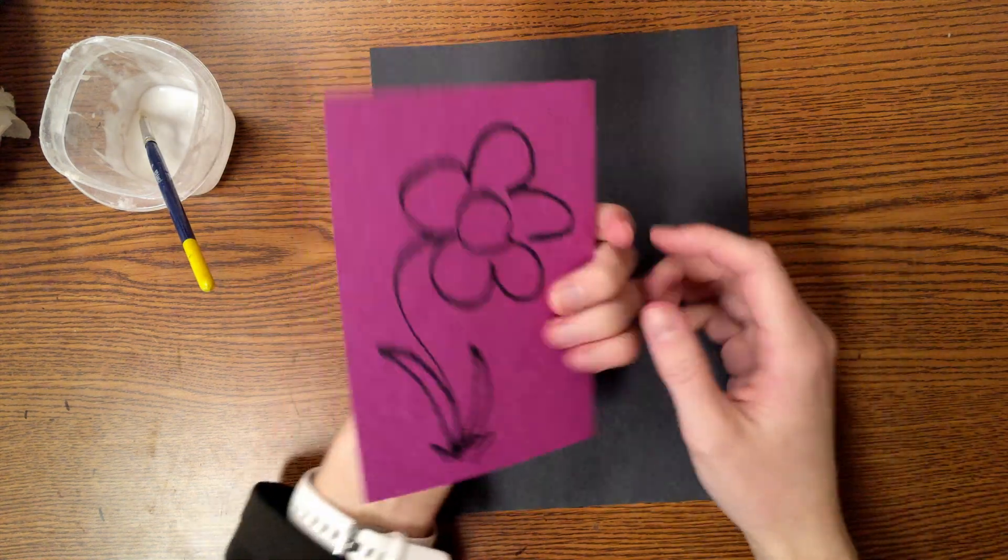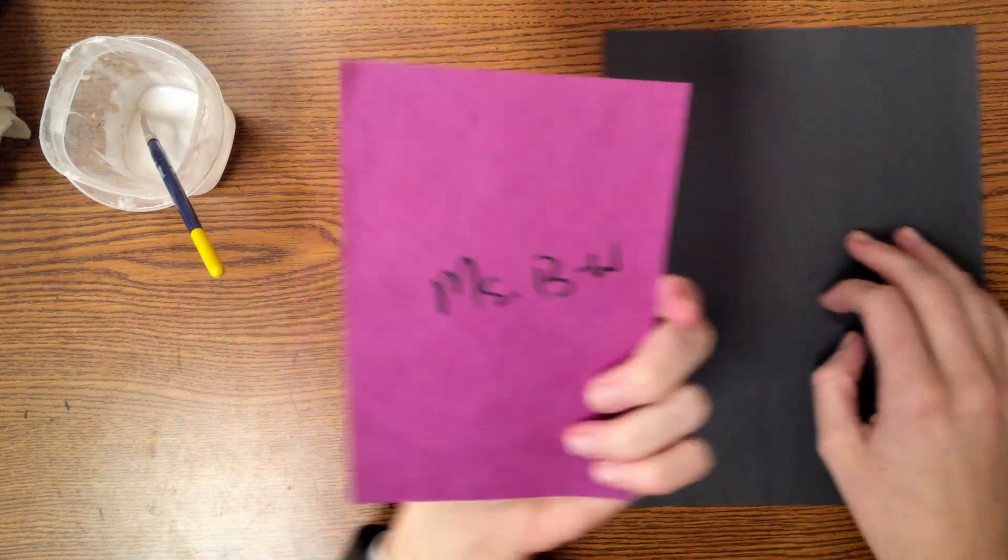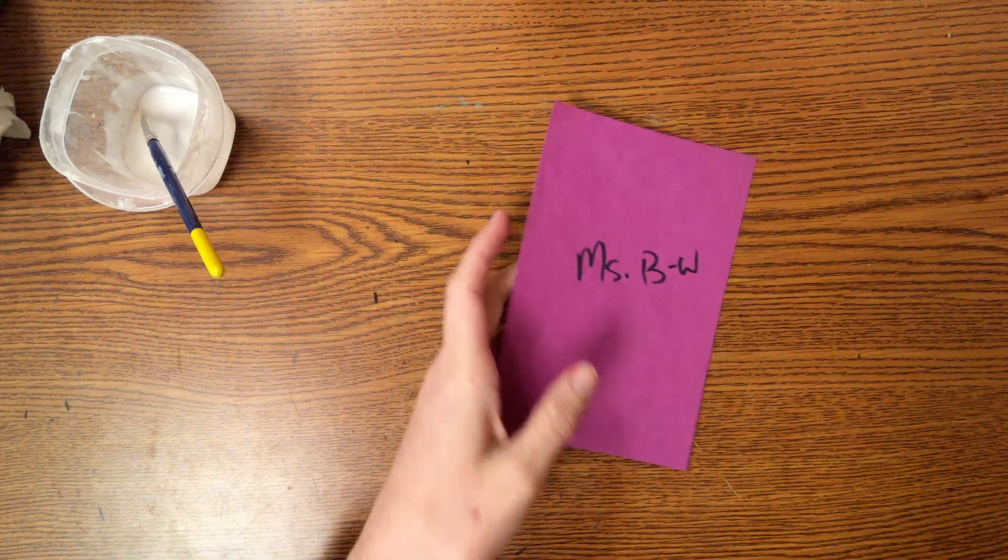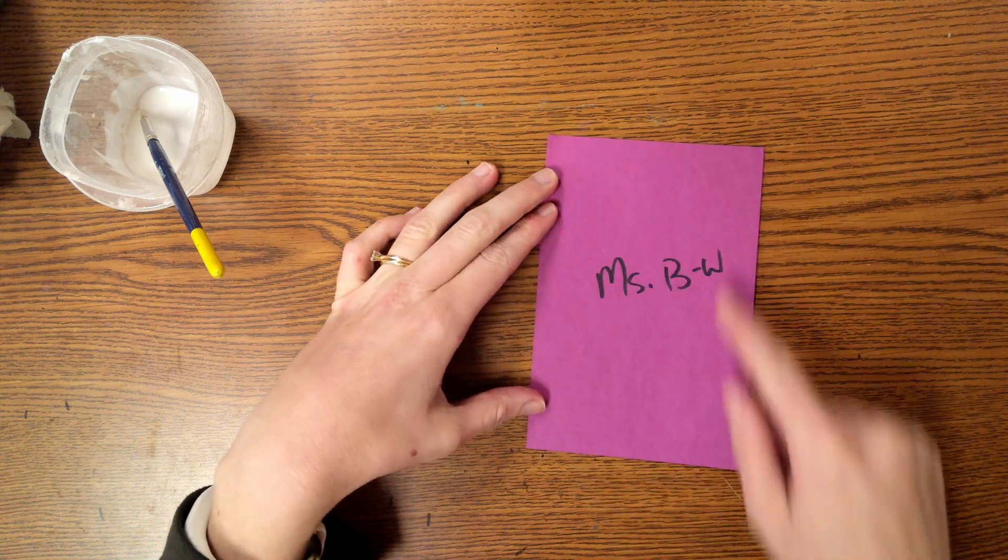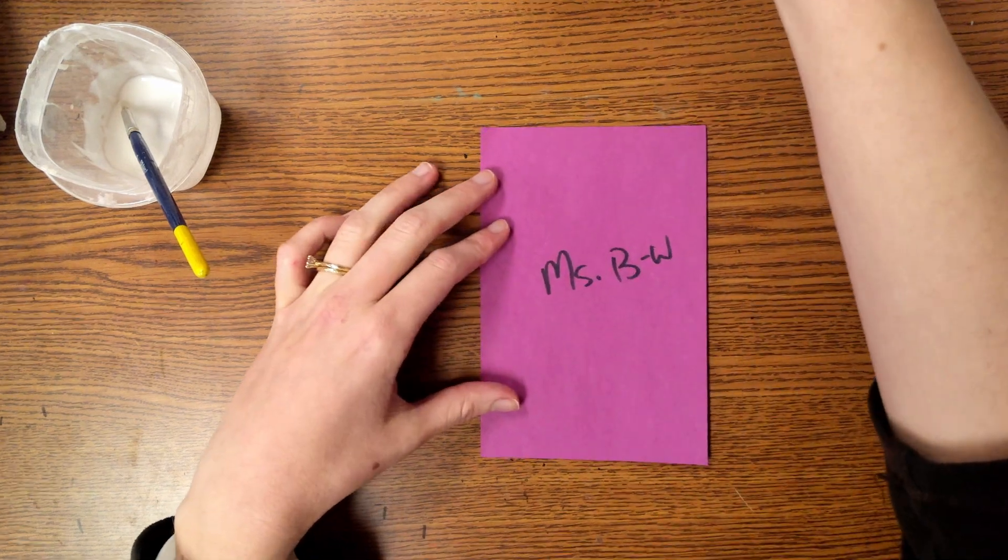Alright, so I've got here my pretend finished artwork and my pretend background. Glue goes on the back of this and it's going to go around the edge and in an X. I'm going to zoom in just a little bit.